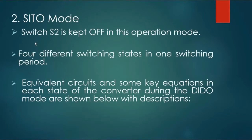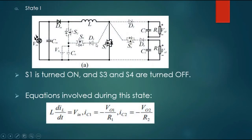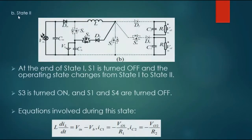Mode 2 — SIDO mode: switch S2 is kept OFF in this operation mode. There are four different switching states in one switching period. Equivalent circuits and key equations in each state are shown. State 1: S1 is turned on, and S3 and S4 are turned off. State 2: At the end of State 1, S1 is turned off and S3 is turned on, while S1 and S4 are turned off.